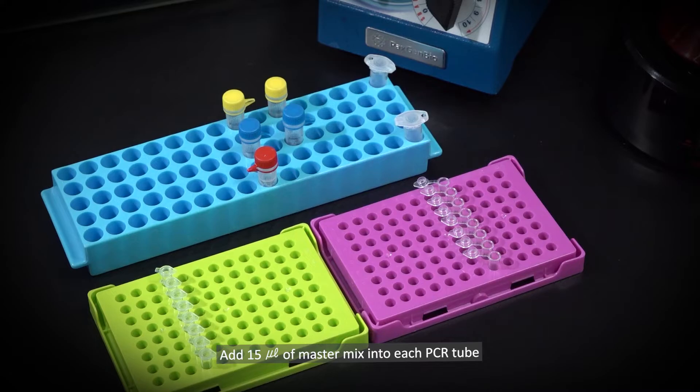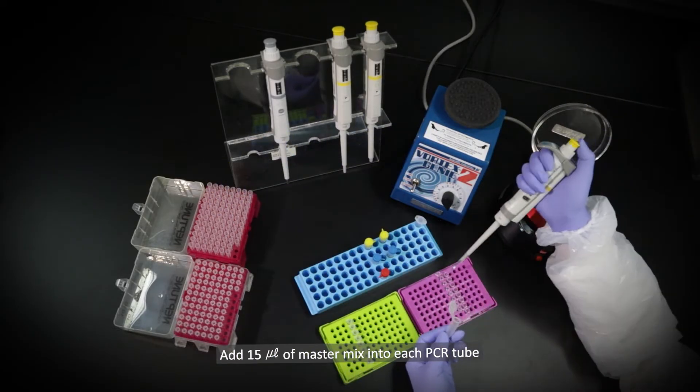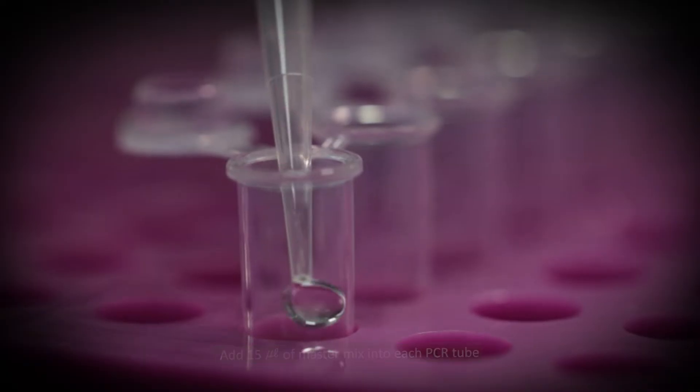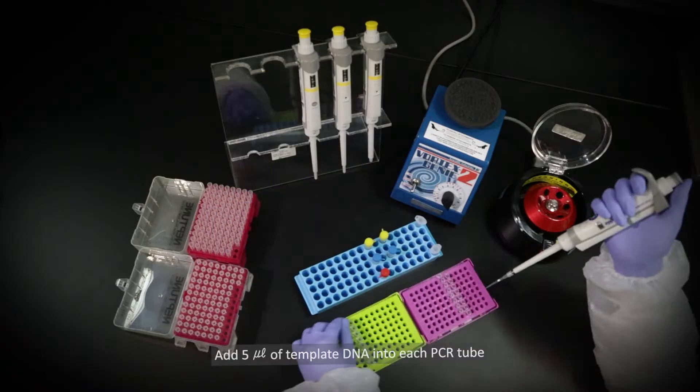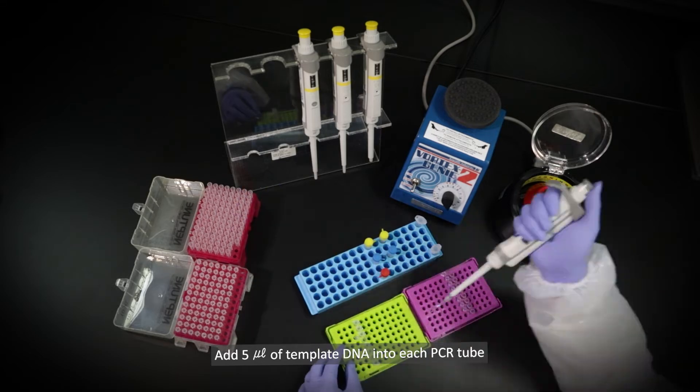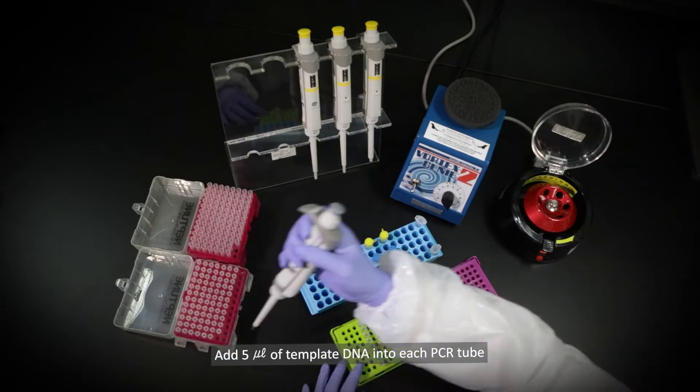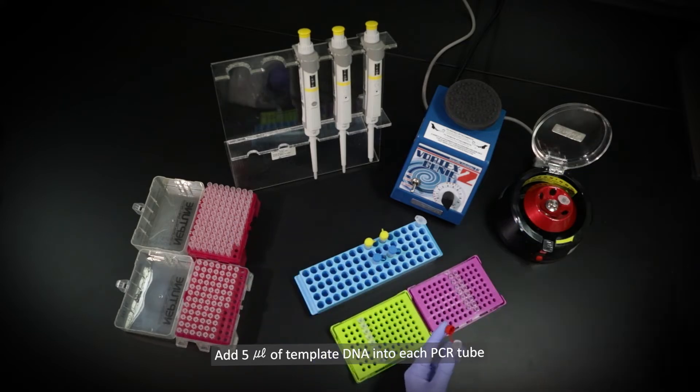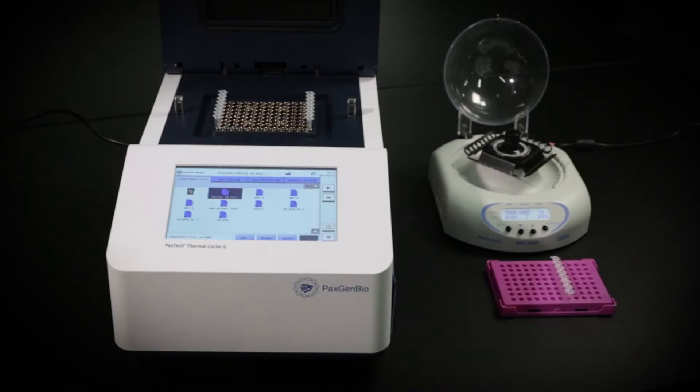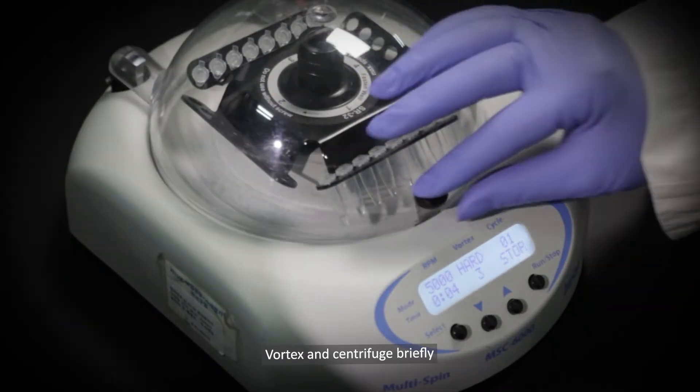15 µL of master mix is added into each PCR tube. Next, extracted DNA is added into the tube. Then the tube is mixed by vortexing and centrifuged briefly.